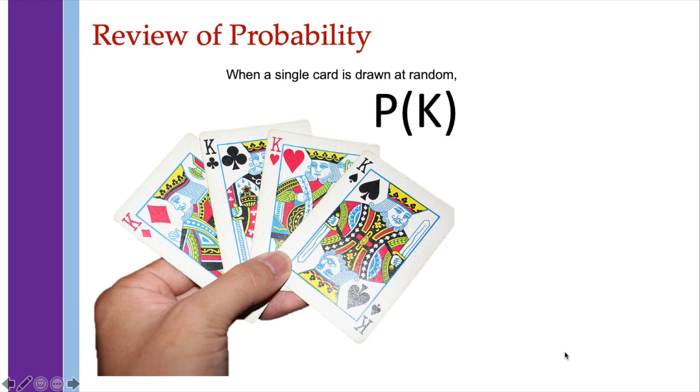How about the probability of getting a king? We know that there are 4 possible kings out of the 52 possible cards. So the probability of a king is 4 out of 52. You may also simplify that as 1 over 13.